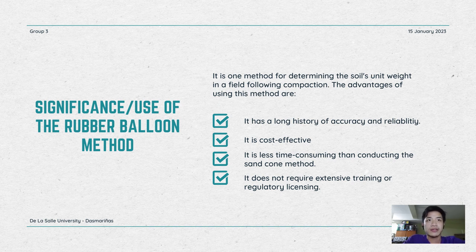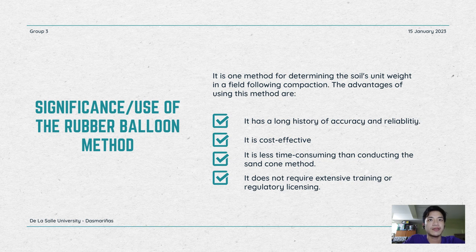The rubber balloon method is one way for determining the soil's unit weight in the field following compaction. It is often used as a basis of acceptance for earthen material compacted to a specific density or percentage of a maximum density determined by a test method, such as test methods D698, D1557, or D4253. This method is not only effective and cheap, it is also less time-consuming than the sand cone method. As the volumeter is simple to operate and the volume can be measured more quickly, it is suitable for all types of soils except those with large quantities of heavy gravel. Thus, it is a good field-based method used in most kinds of soils to determine the density.